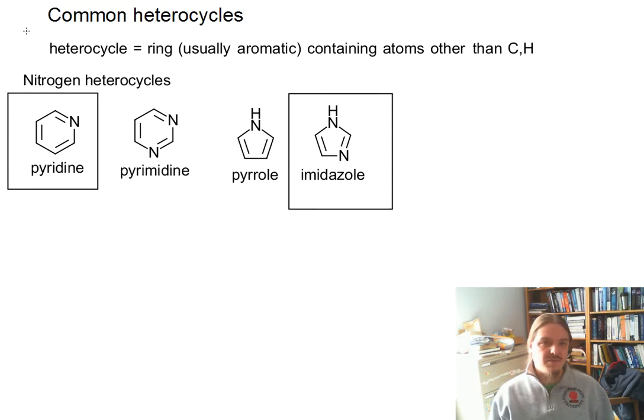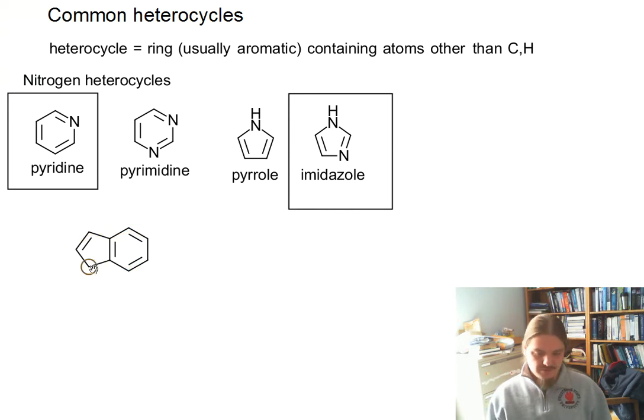And then there are a couple of bicyclic nitrogen heterocycles that are worth sharing. One is indole, which is found in the amino acid tryptophan and things that are derived from it, like serotonin.